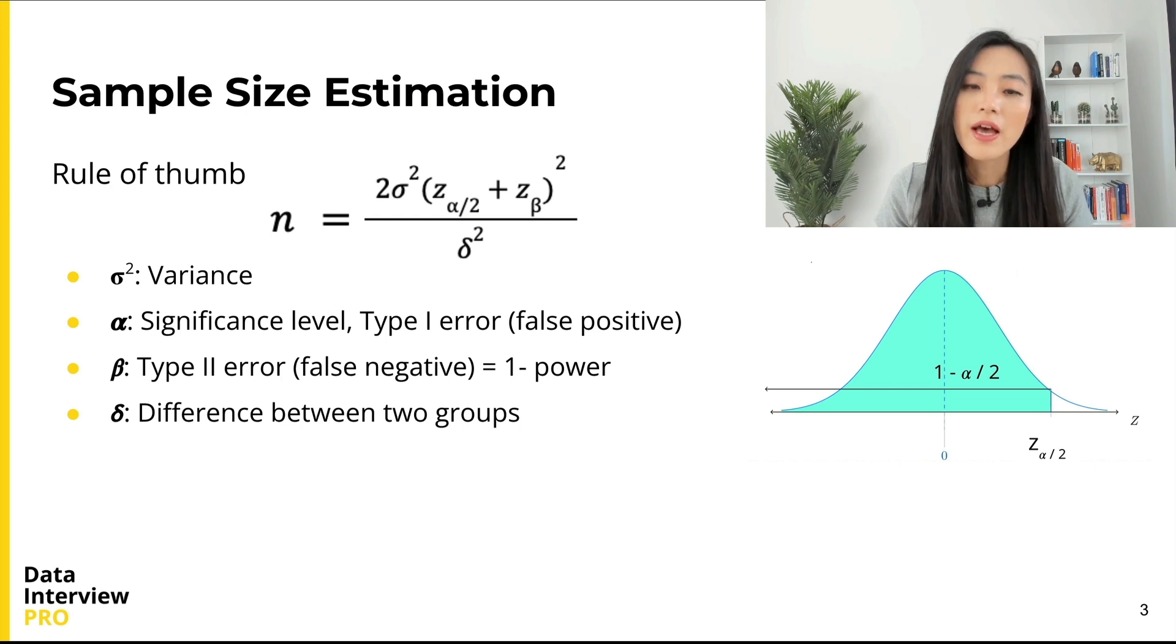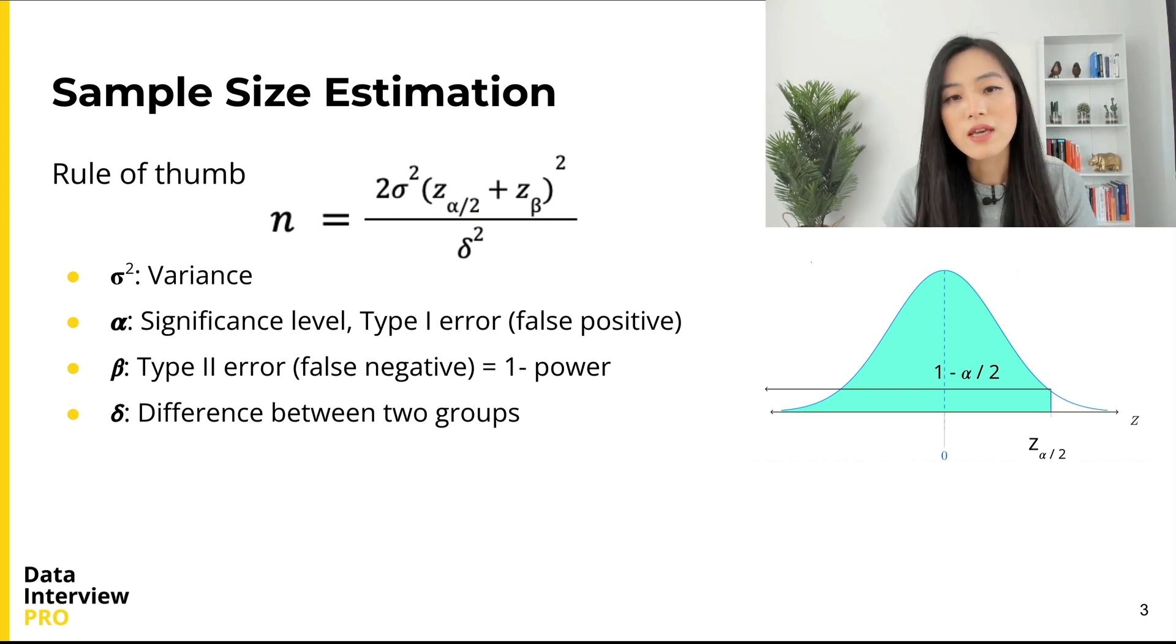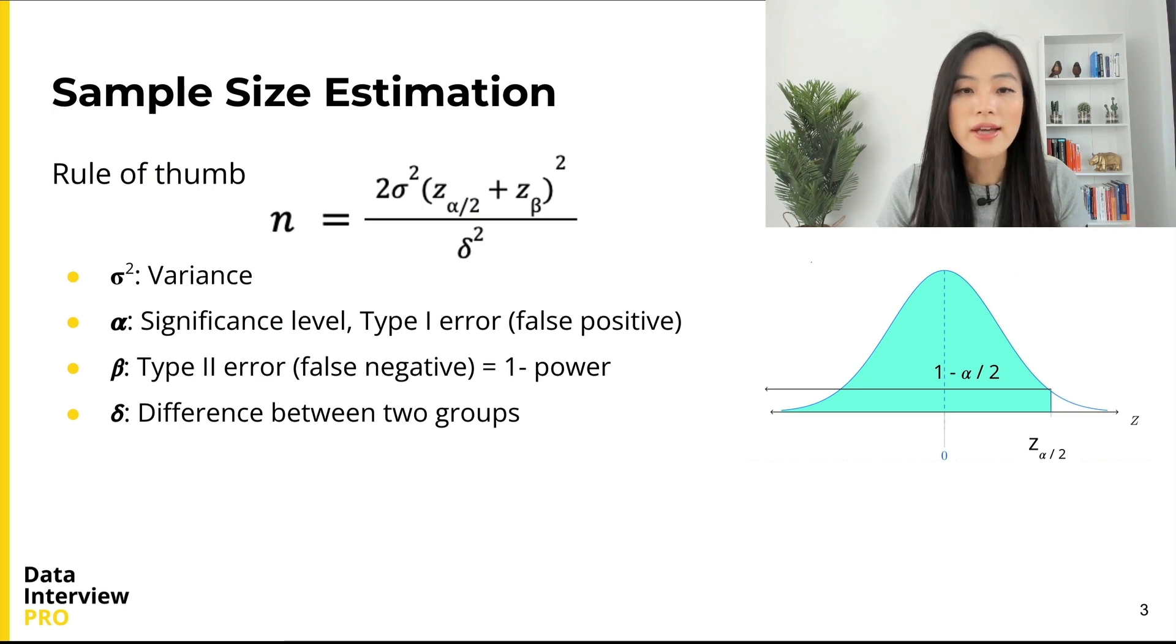z_{α/2} is a z-score such that the area to the right of z_{α/2} is α/2 under the standard normal curve. β is a Type II error or false negative rate, the same as 1 minus power.